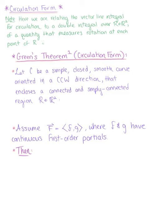With this circulation form of Green's theorem, we're relating the vector line integral for circulation that we already know to a double integral over some region R in the plane. And we're getting a quantity that measures rotation at each point within this region R.